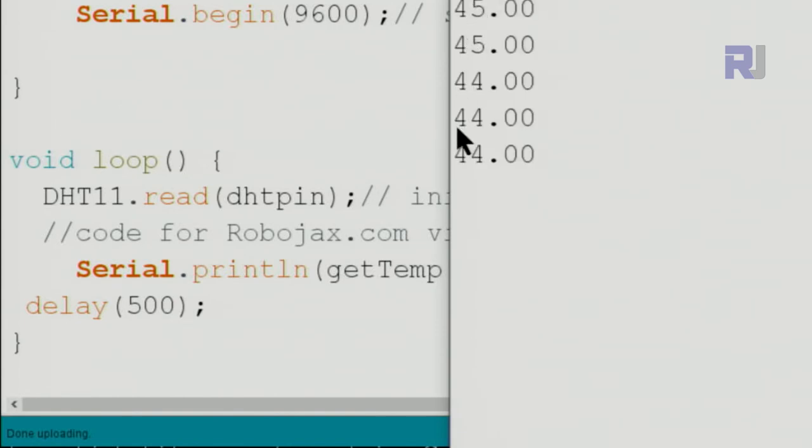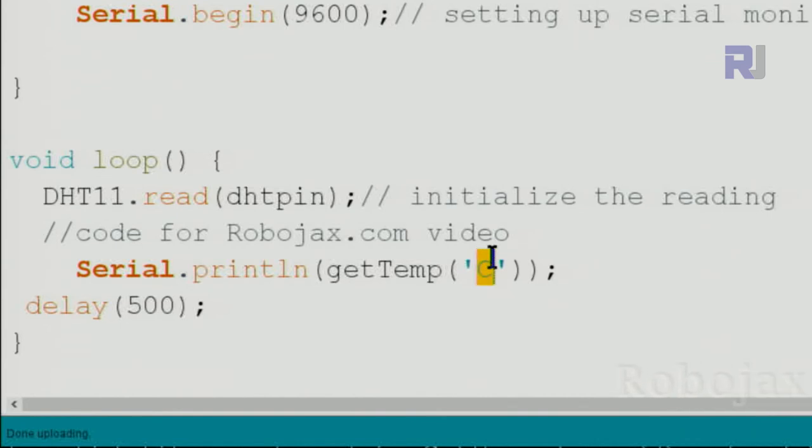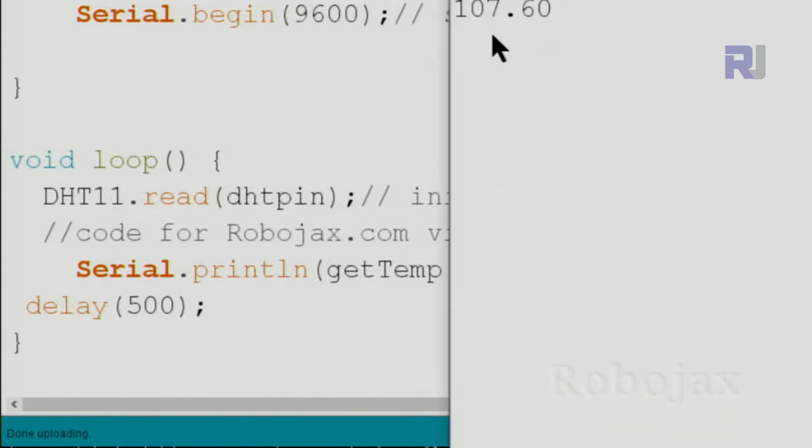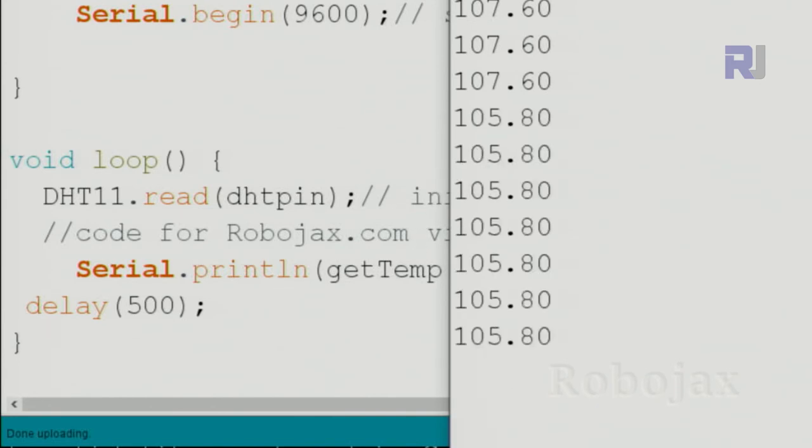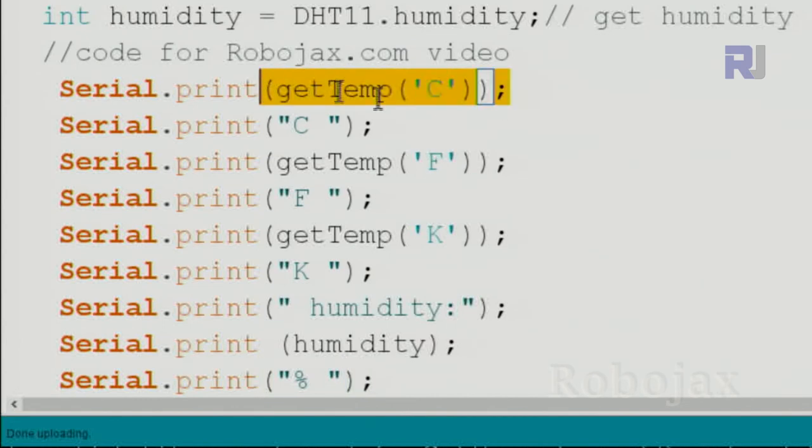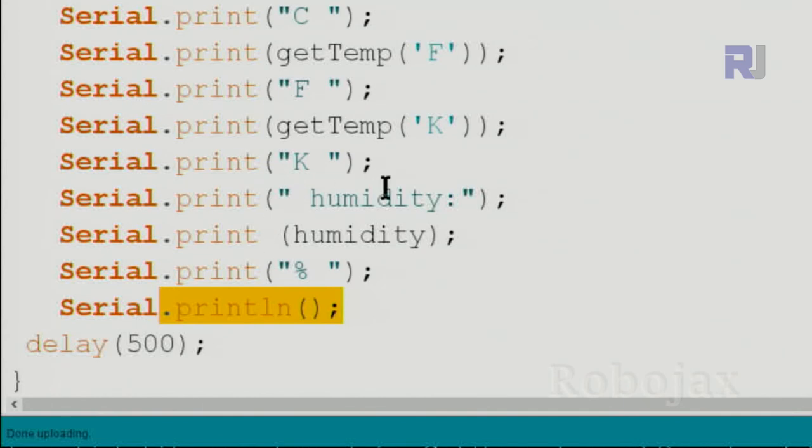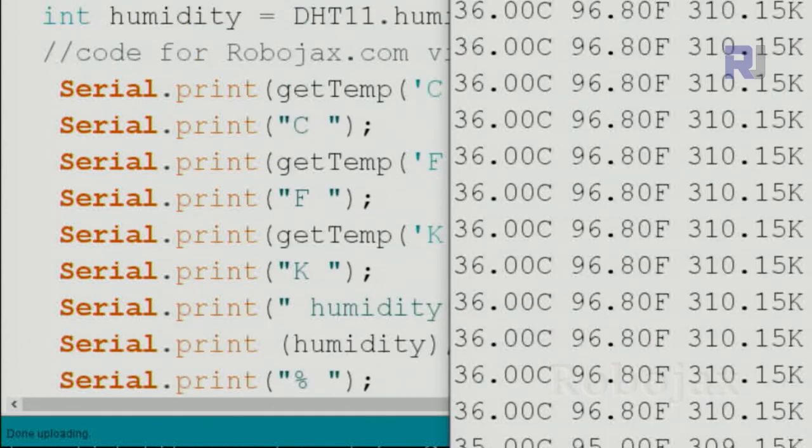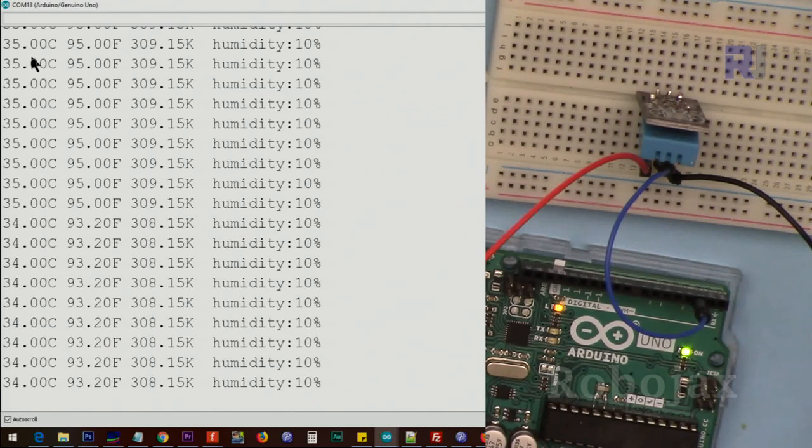It shows the value here, and to get Fahrenheit you will get Fahrenheit. The same way Kelvin. Here I've used multiple lines of the same code: get_temp and then Celsius, and I'm putting the capital C, and then Fahrenheit capital F, that's a text, and then Kelvin capital K, and then humidity and then percent, a new line, and the code continues. Once the code is loaded, this is how it shows: 35 degrees Celsius, 95 degrees Fahrenheit, 309.15 degrees Kelvin, and then humidity as 10 percent, all in one line.